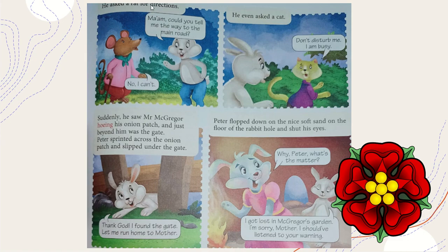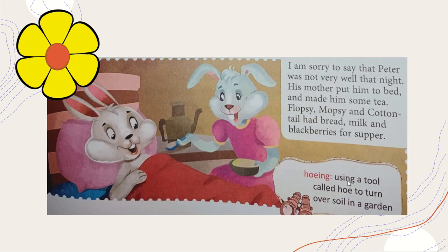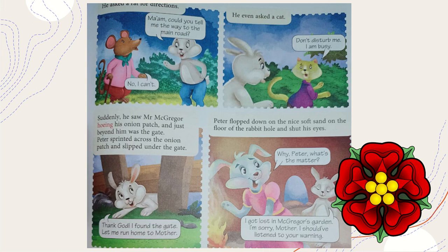Peter asked a rat in the garden for directions to the main road, but she said she couldn't help. He even asked a cat, who said she was busy. No one was there to help him. Then suddenly he saw Mr. MacGranger in the onion patch, using a tool called a hide to turn over the soil and remove onions.